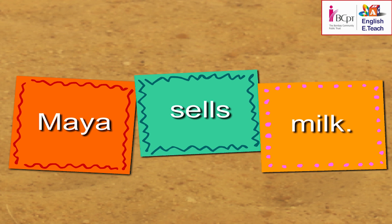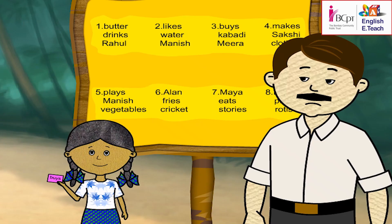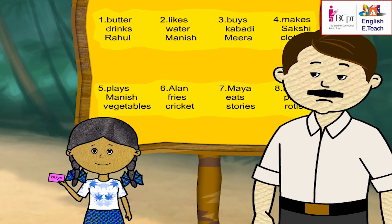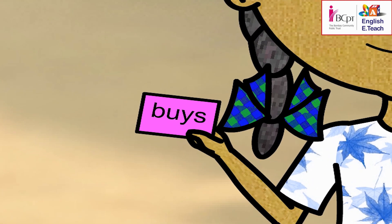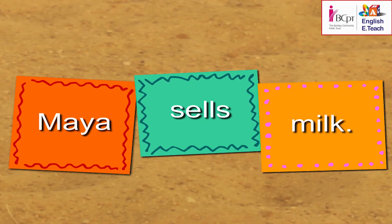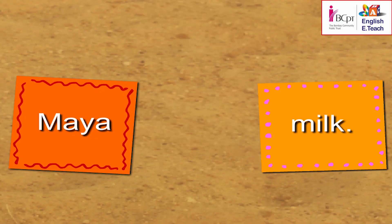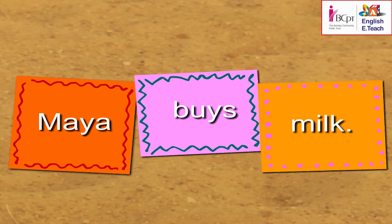Good. Ruchi, do the same with another word. Buys. Maya buys milk.